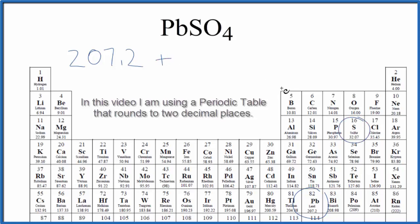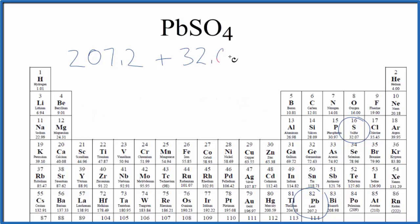Sulfur on the periodic table, 32.07 grams per mole. We only have one sulfur.